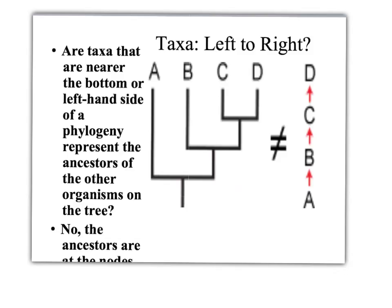Are taxa that are near the bottom or the left-hand side of a phylogeny representative of the ancestors of the other organisms on the tree? No, the ancestors are not because the ancestors are only represented at the nodes of the tree.